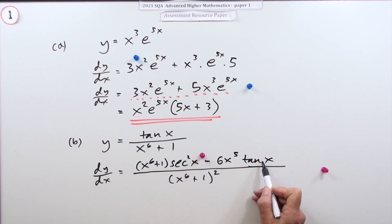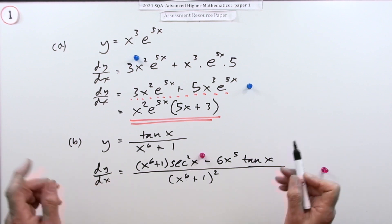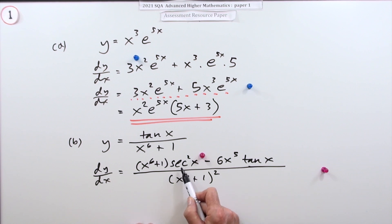The only thing you could possibly do to that, which wouldn't actually make it look much better, would be you could replace this sec²x with 1 + tan²x and then the top would be a quadratic in tan. That wouldn't really be much of an improvement.